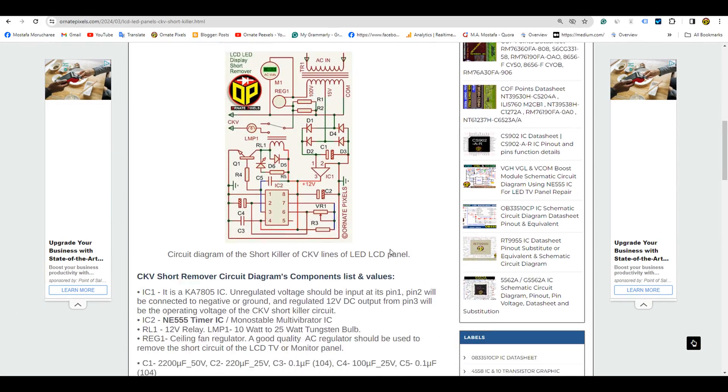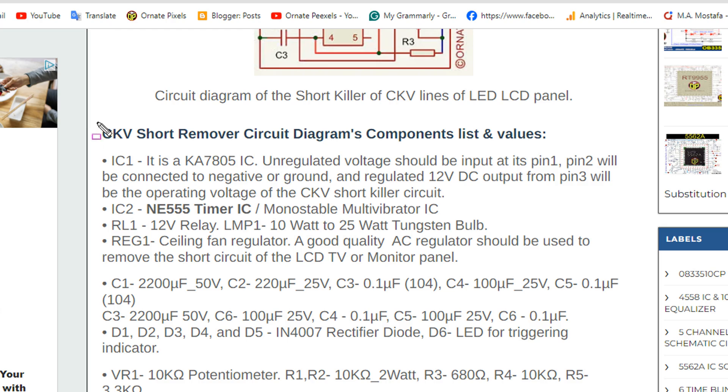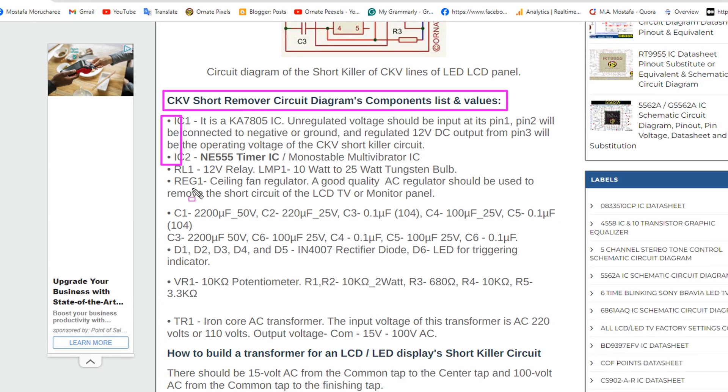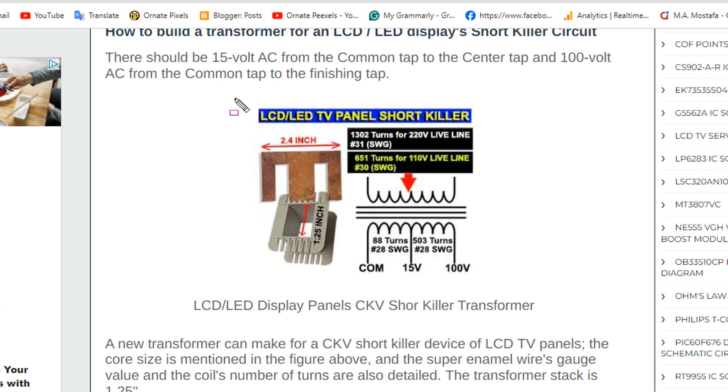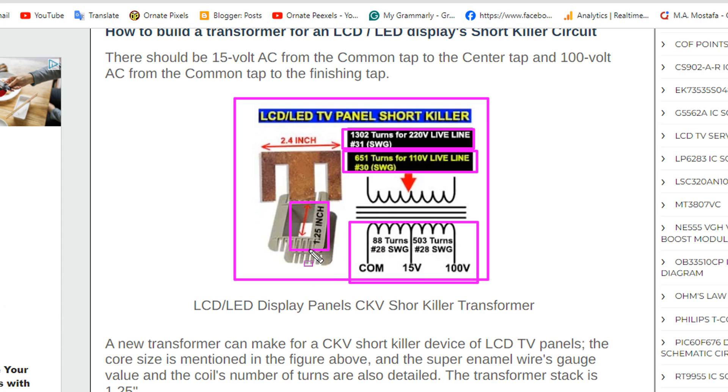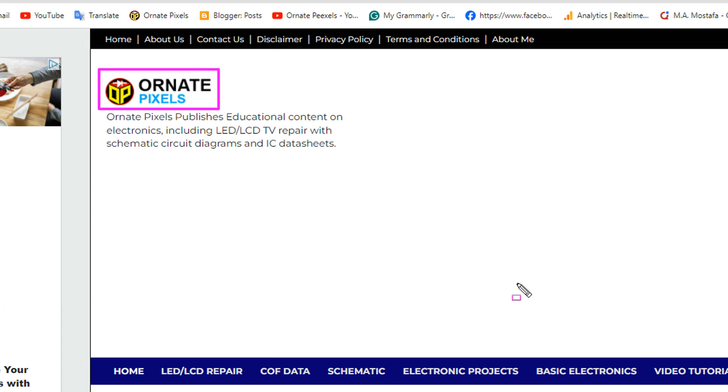Now let's look at the list and values of the parts and other information. I have published the numbers and values of the components here. If you want to build a new transformer for the panel short killer, all the technical support is here. For that, you can visit ornate pixels dot com. The link is in the video description.